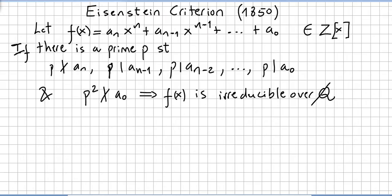This video will be about the Eisenstein criterion, a theorem from 1850. We are doing a series of videos on the factorization of polynomials, and this is a very important theorem about the factorization of polynomials.